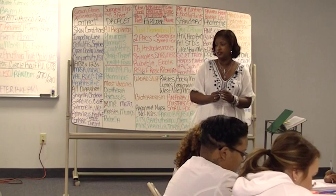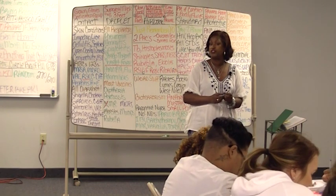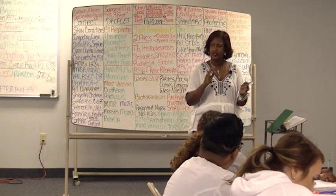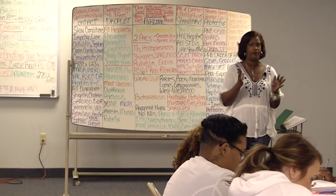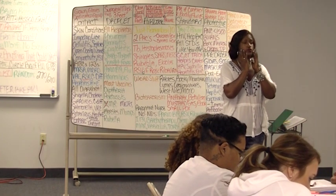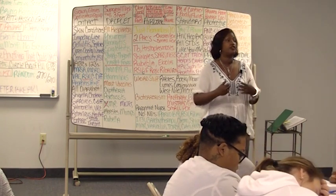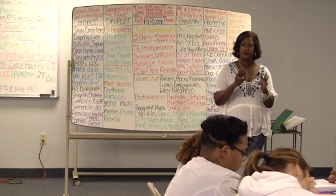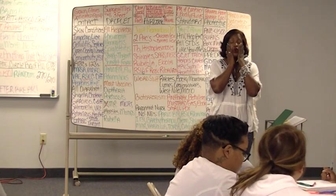Parvo B-19 is a childhood condition. The child presents with very rosy red cheeks and a lace-like rash — like lace on clothing — all over their body. The rash starts with the face, then spreads to the arms and trunk. It appears lacy, with a white mixed with red or purplish pattern. The face is very rosy red.